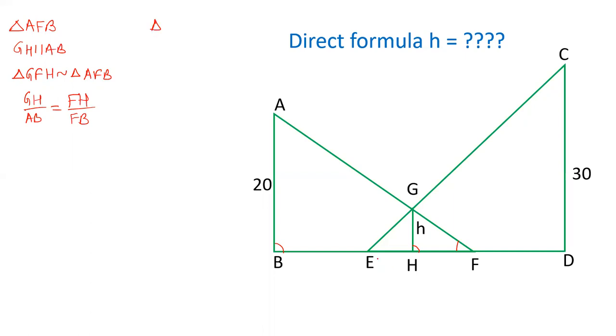Now we take the triangle ECD. In triangle ECD, GH is parallel to CD. This is why triangle EGH is similar to triangle ECD. Therefore, GH upon CD equals EH upon ED.